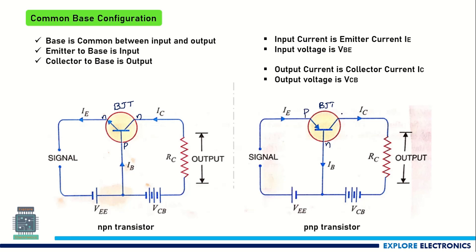In the PNP transistor, this is the P region, this is the N region, and this is the P region. You can have a common base configuration out of an NPN transistor as well as a PNP transistor. Now, if you look at the NPN transistor circuit, the base terminal is common between the input side and the output side.